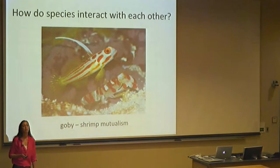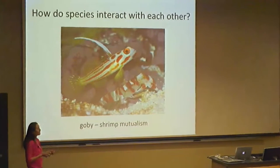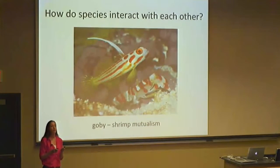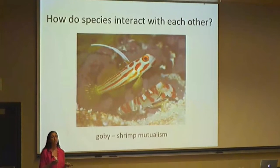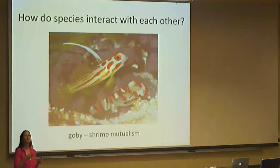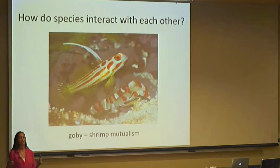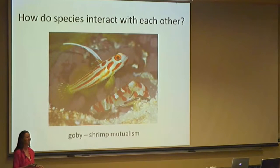One of the other questions I'm interested in is how species interact with each other. In this example, I'm showing a goby fish and its shrimp partner. These guys pair up early in life and stay together for life, with a really nice mutualism. The shrimp builds and maintains a burrow in the sand, and because the shrimp is blind, the fish acts as the bodyguard, scaring away predators. They both benefit from this relationship. There are a lot of cool YouTube videos about this online if you want to look them up.